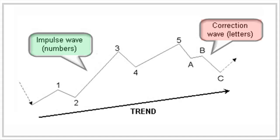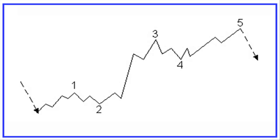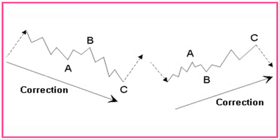Impulse waves are identified by numbers. Correction waves are identified by letters. Here you can see an up-trend impulse wave followed by a correction wave. Impulse waves 1, 3 and 5 move in the direction of the trend and therefore consist of another impulse wave of a lower degree. We know already that the up-trending and down-trending correction wave has 3 waves. Waves A and C point in the direction of the correction, while wave B is moving against this direction. Waves A and C in a correction wave move in the direction of the correction trend and are therefore usually also impulse waves, consisting of 5 waves.